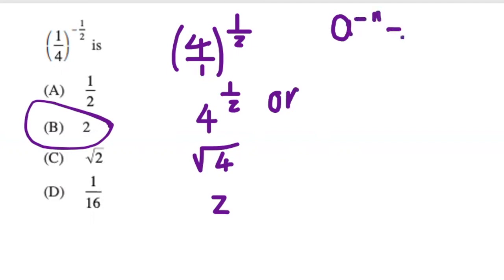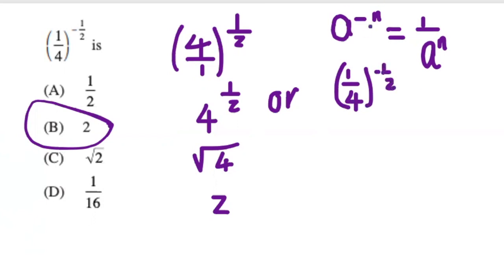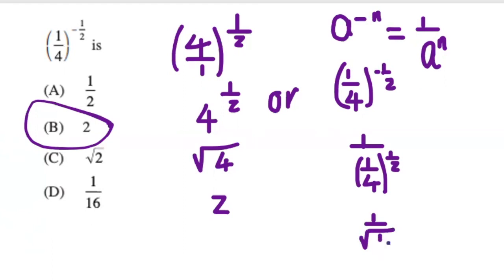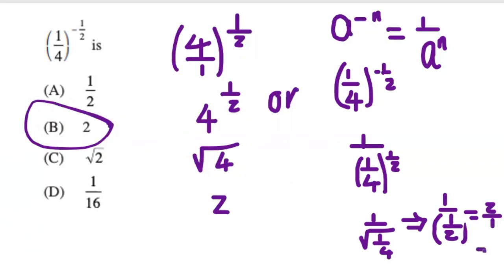There's another way using the law: A to the negative N equals one over A to the N. Applying this, a quarter to the negative half becomes one over (a quarter to the positive half). A half means square root, so this is one over the square root of one quarter. The square root of one is one and the square root of four is two, giving one over one half. Flipping the fraction gives two, the same answer.